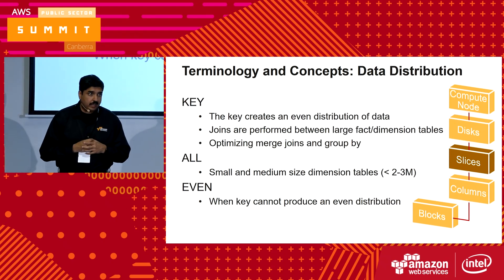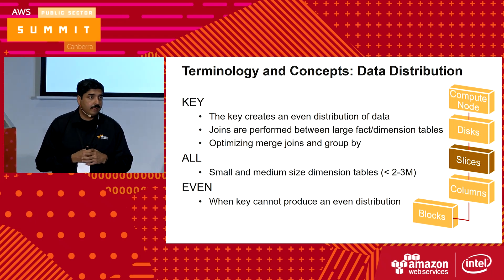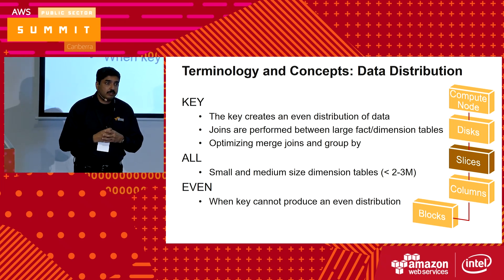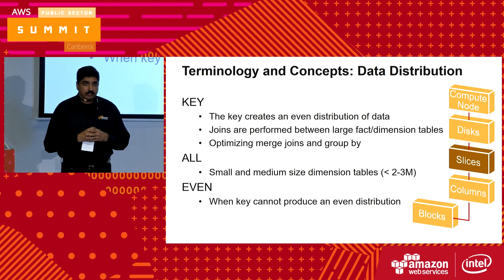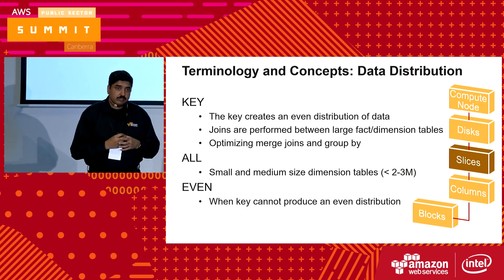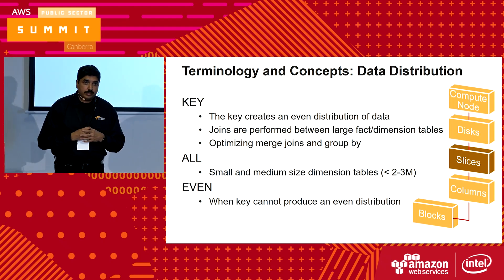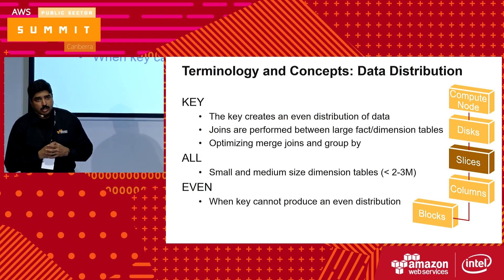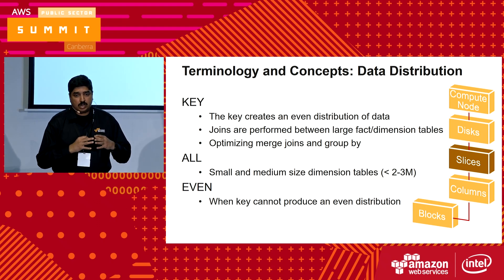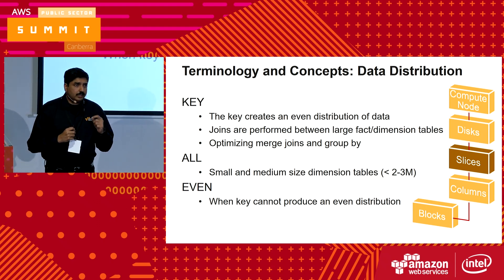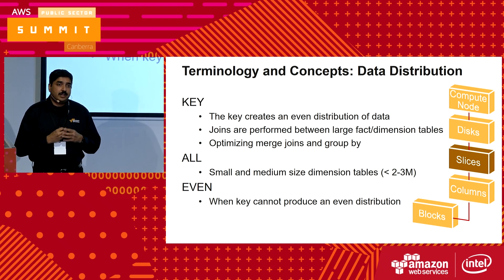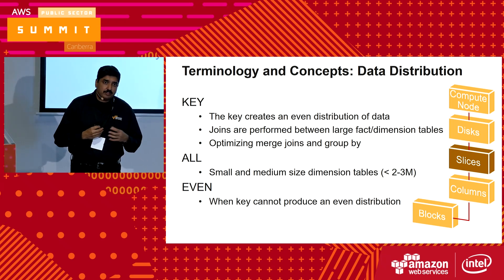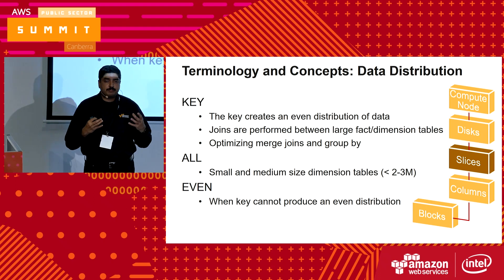Data distribution is very important — as important as sort keys. We have three ways of distributing data in Redshift, which is a massively parallel processing system. You can distribute using a key that you define, distribute data to all slices in the cluster, or ask Redshift to evenly distribute data across nodes. On the key side, you need to ensure your data is evenly distributed — if you have lopsided distribution, your cluster won't perform optimally.